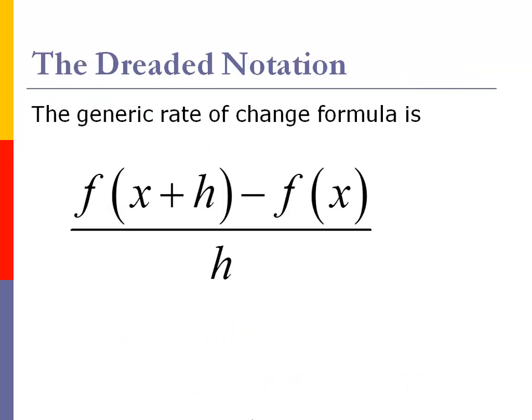So now we're looking at the generic rate of change formula. So we've got f of x plus h minus f of x over h. And so this is that function notation. Basically, it's slope, it's the rate of change, it's the change of output over change of input, it's the change in y's over the change of x's, all your different variations of slope, delta y, delta x, those kind of things.